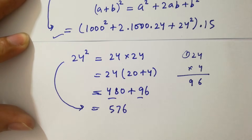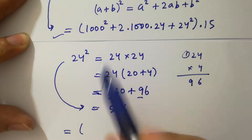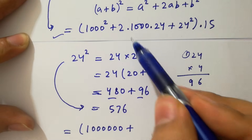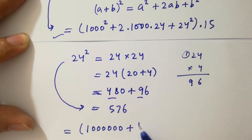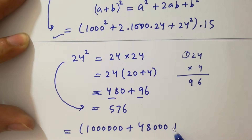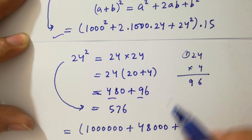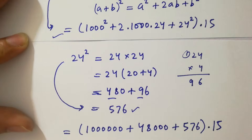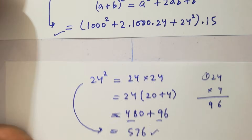Now computing each term: 1000 squared gives 1 followed by 6 zeros, which is 1,000,000. Then 2 times 1000 times 24 equals 48,000. And 24 squared is 576. So we have (1,000,000 plus 48,000 plus 576), all times 15.